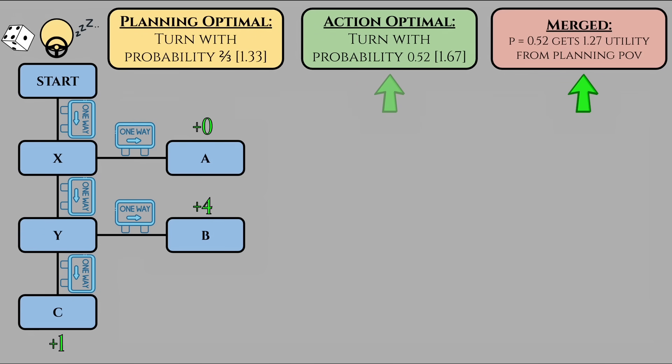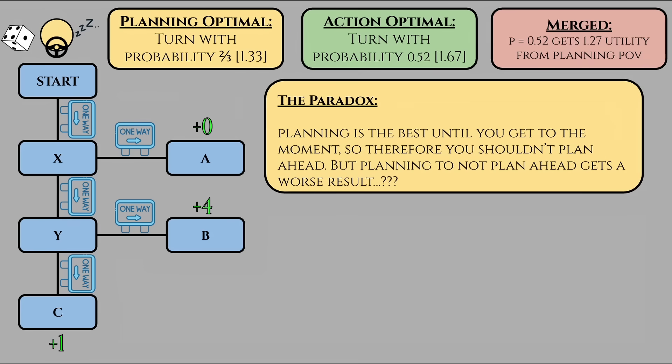In other words, it appears that not planning ahead initially gets the best result, but the inherent act of planning to not plan ahead gets the worst result. So how on earth do we resolve this? After all, surely it makes some sense to accept the idea that we'll always be at some intersection.